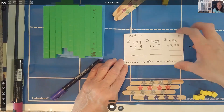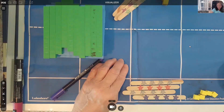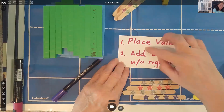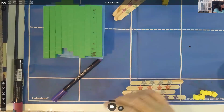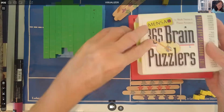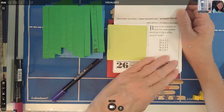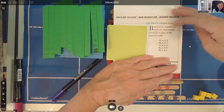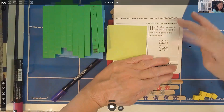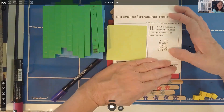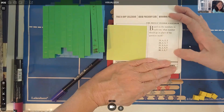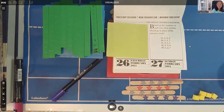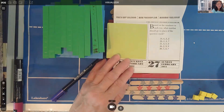To conclude: I've covered place value and addition with and without regrouping. There's also a fun brain puzzle — based on the numbers in each row, what number should go in place of the question mark? Pause the video; the answer will be provided in the description. Thank you so much for your time. I hope you enjoyed this video. See you next time — take care!